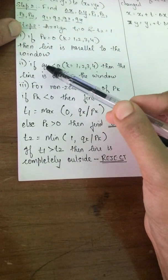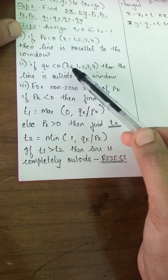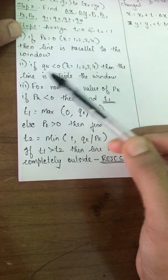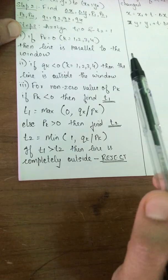If qk is less than 0, where k equals 1, 2, 3, 4, then the line is outside the window and you reject it.